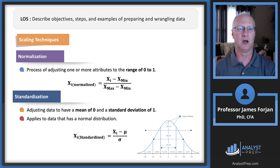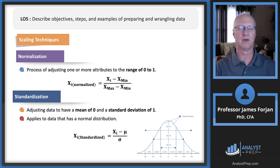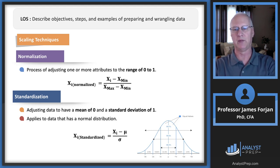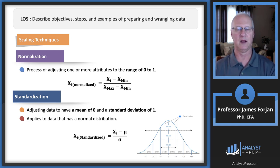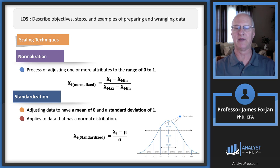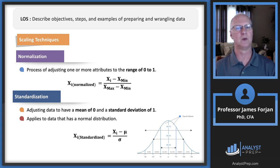The reading mentions two scaling techniques. Standardization — which you're likely familiar with from Level 1 — adjusts data to have a mean of zero and a standard deviation of one. You take each X variable, subtract its mean, then divide by the standard deviation. Normalization is similar but takes differences in both numerator and denominator, using the difference between maximum and minimum values in the denominator.